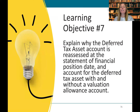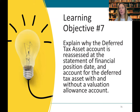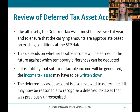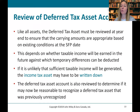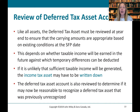Learning objective number seven: explain why the deferred tax asset account is reassessed at the statement of financial position date and account for the deferred tax asset with and without a valuation allowance account under IFRS. Like all assets, the deferred tax asset must be reviewed at year end to ensure that the carrying amounts are appropriate based on conditions at the statement of financial position date. This depends on whether taxable income will be earned in the future against which the tax losses can be deducted. If it's unlikely, the income tax asset may have to be written down — just because at one point we thought it was more likely than not doesn't mean that can't change. The deferred tax asset account is also reviewed to determine if we should be recognizing anything we previously didn't recognize — maybe it is now more likely than not.